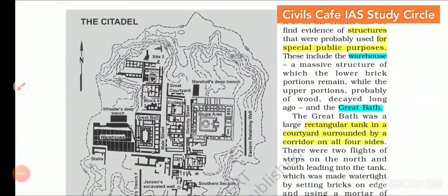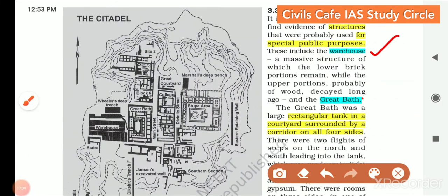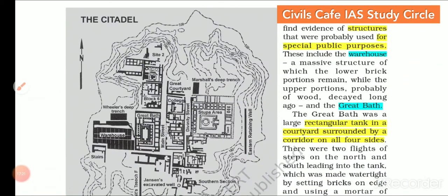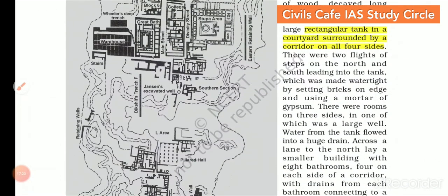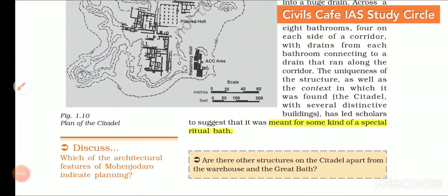The Citadel housed two important structures: a warehouse and the Great Bath. The Great Bath was found in Mohenjo-Daro — always remember it was found in Mohenjo-Daro and not Harappa. It was a rectangular tank in a courtyard surrounded by corridors on all four sides, and is believed to have been meant for some kind of special ritual bath.